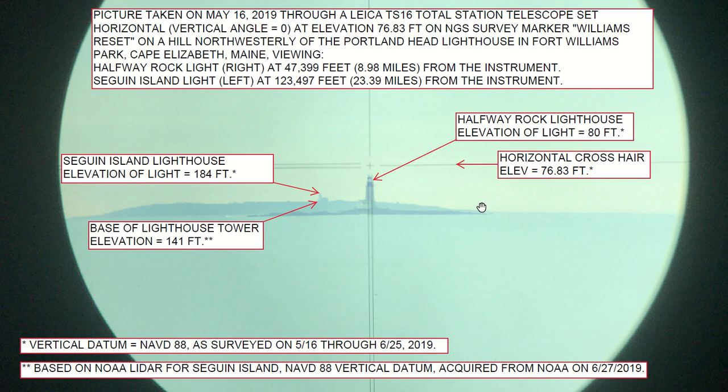Now let's think about this logically. We have the horizontal crosshair at an elevation of 76.83 feet. Halfway Rock Lighthouse has an elevation of the light on NAVD-88 of 80 feet. Then we have Seguin Island Lighthouse, which has an elevation of the light of 184 feet on NAVD-88.